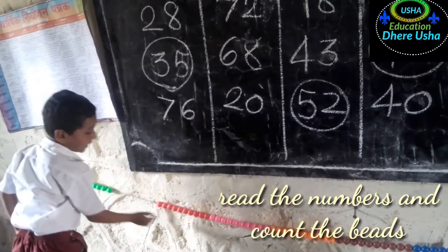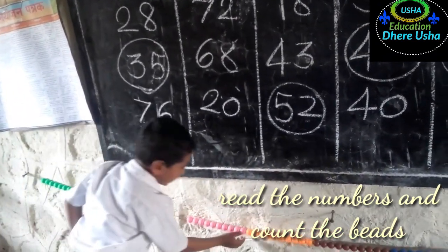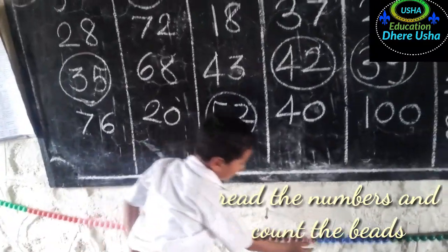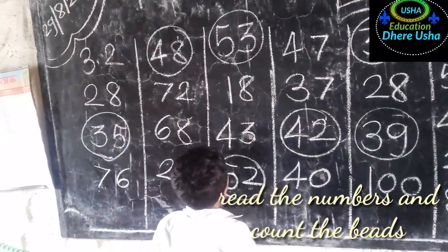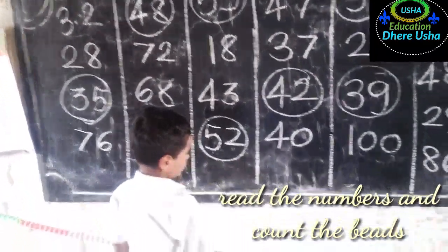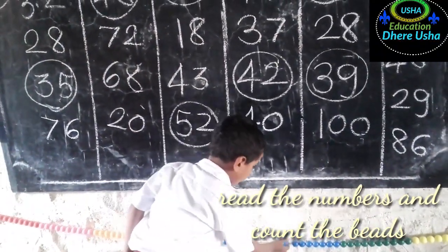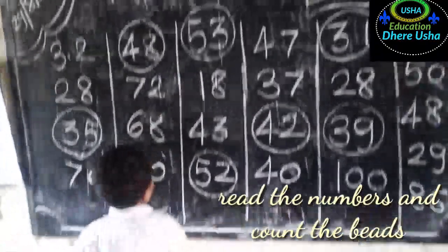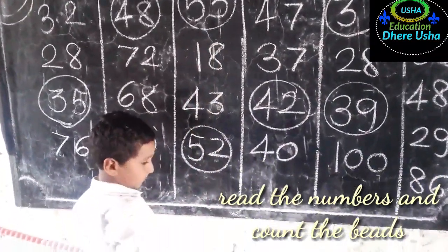One ten, two tens, three tens, four tens, five tens. How many units? Three. One, two, three. These beads are fifty-three. Very good.